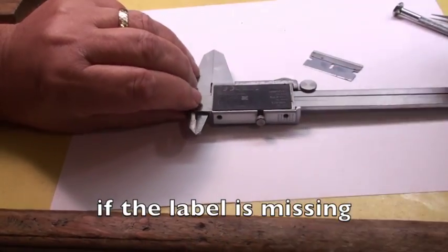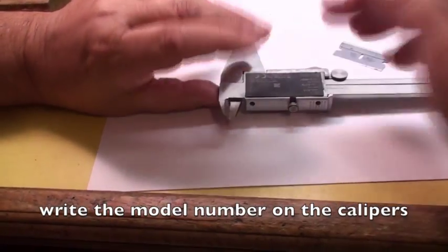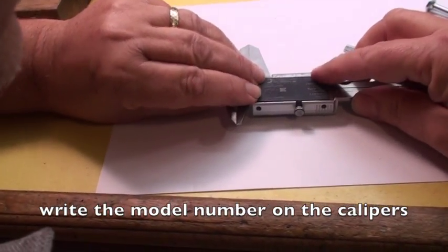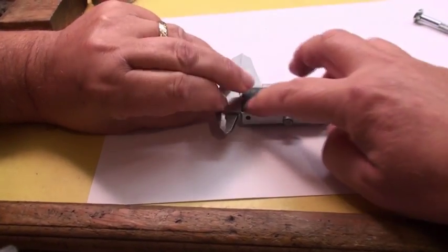You could use a tool and scratch the model number in underneath. If you've lost this label, it won't stick. But you really want to keep track of what model you have.